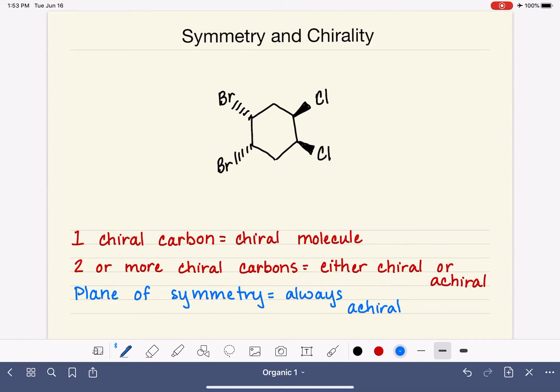It does not matter how many chiral carbons it might have. Here is an example of a molecule that has four chiral carbons. If we were asked the question, is this molecule chiral or not? Because it has four chiral carbons, we would need to ask ourselves if we can find a plane of symmetry.